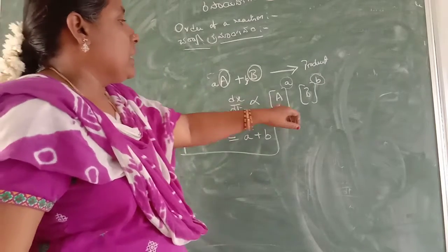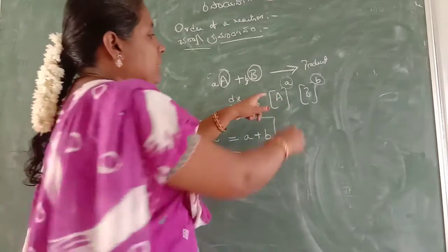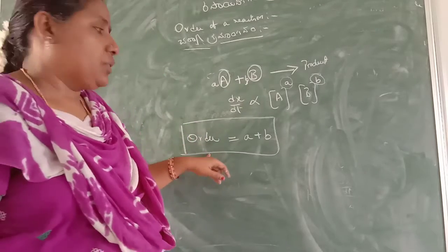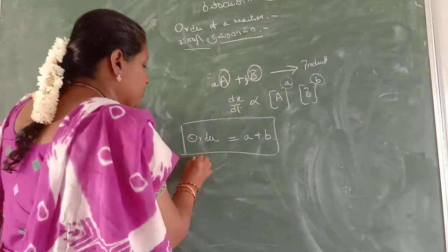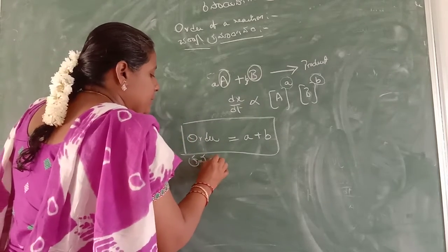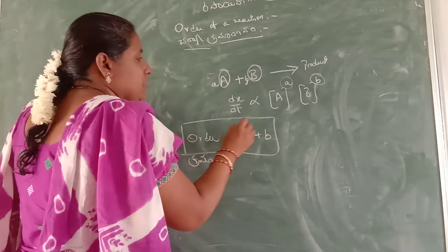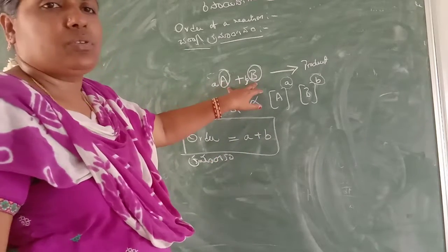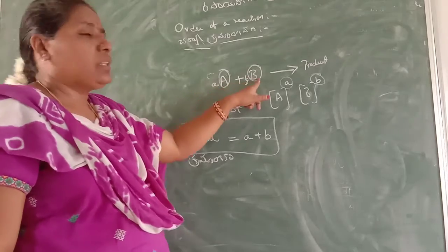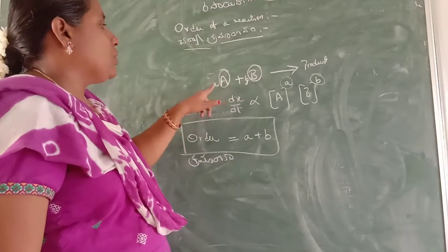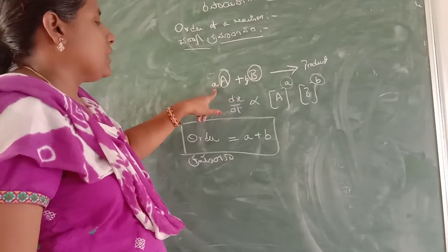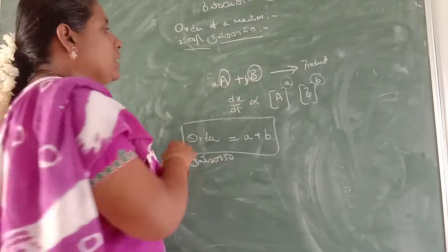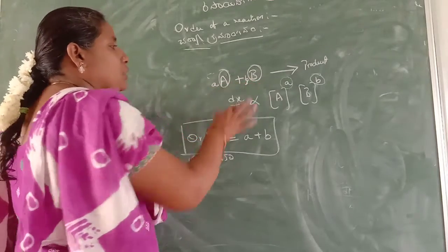Kriyajanakal Kramantanamu — based on the law, the order of the reaction (Kramantanamu) is defined by the powers of the reactant concentrations.